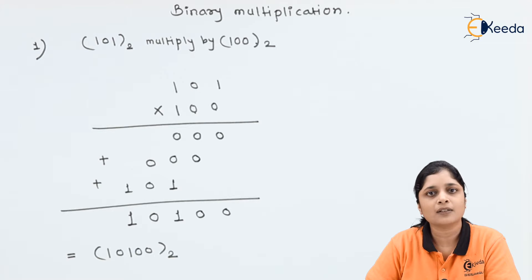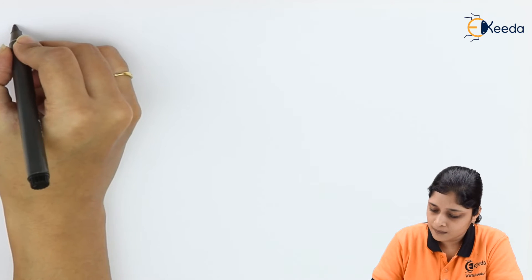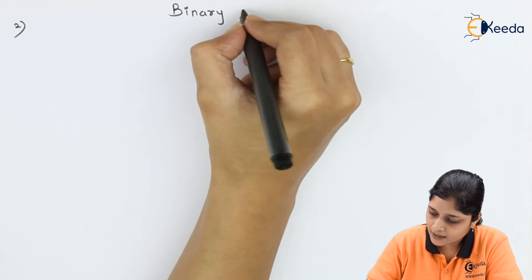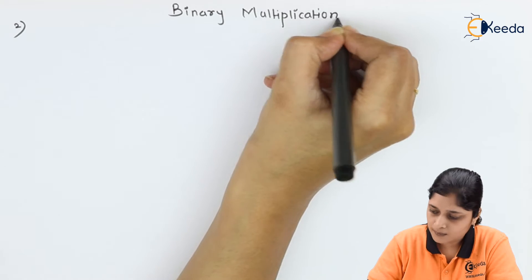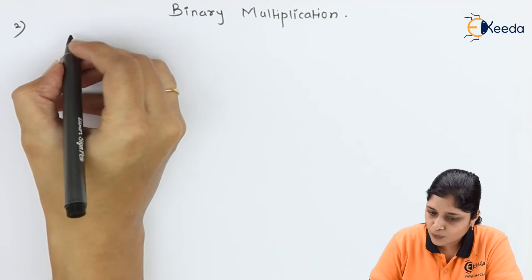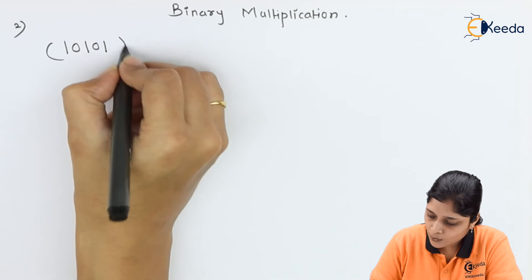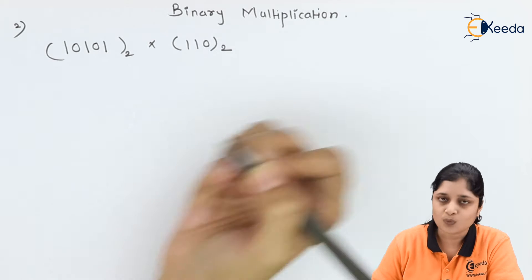Considering the rules of binary addition, you calculate binary multiplication. This is all about the first example. Now let's take the second example: 10101 base 2, and you have to multiply this by 110 base 2.